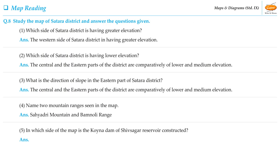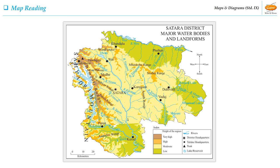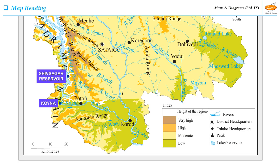Let us study the fifth question of this activity: In which side of the map is the Koina Dam of Shivsagar Reservoir constructed? The Koina Dam of Shivsagar Reservoir is constructed in the southwest region of the map.